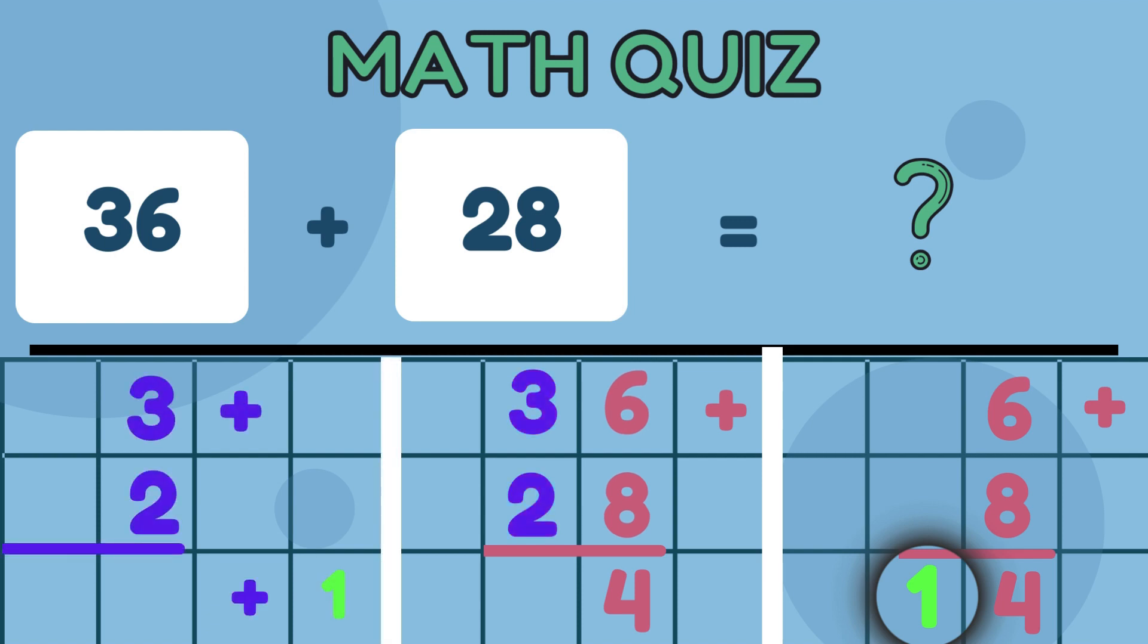Now, add the digits in place of the 10's, including the value we have left from the first column. 3 plus 2 plus 1 equals 6. Step 3.